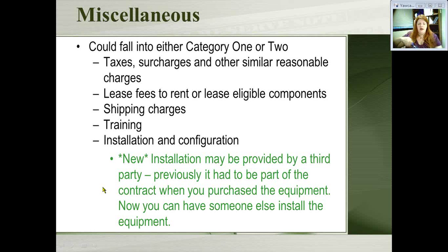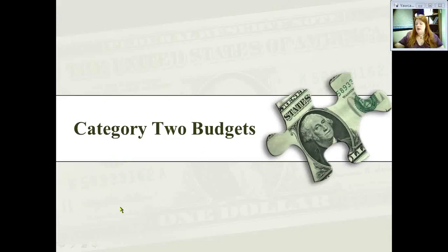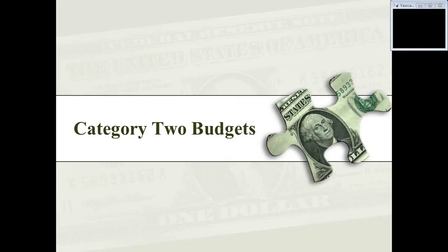Now, on to Category 2 budgets. How do you get the money for Category 2? It is done differently than Category 1. Category 1 uses your school lunch numbers and urban or rural status to calculate a discount on your actual bills.